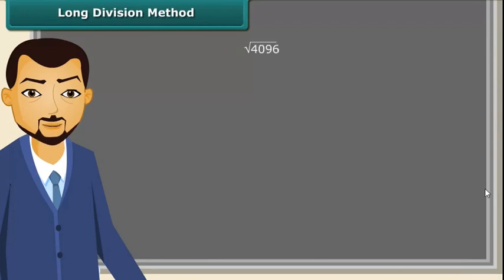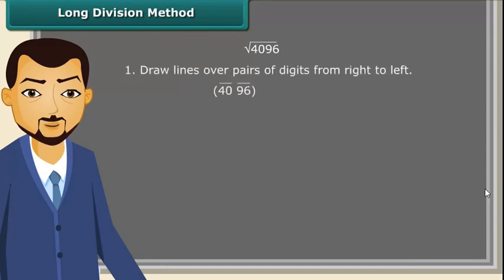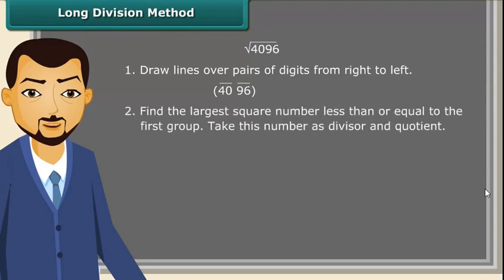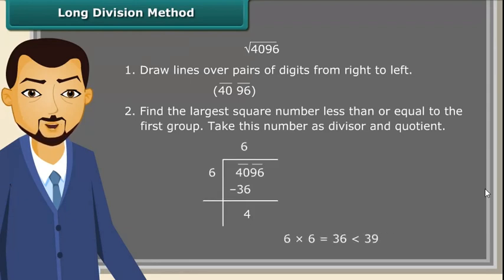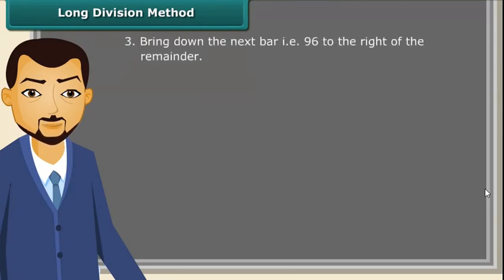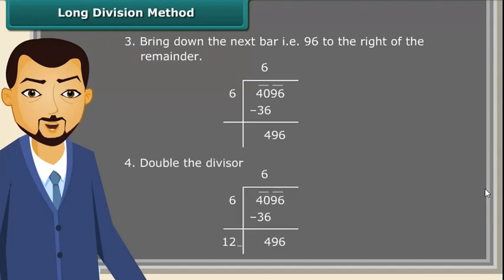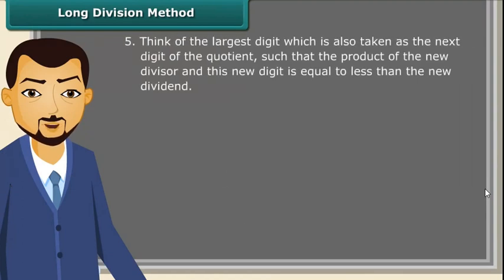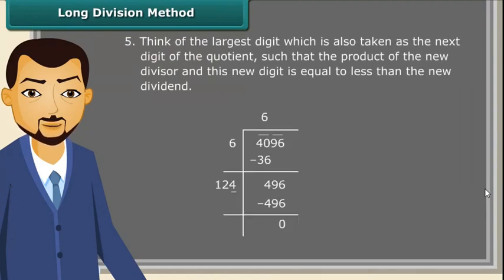For large numbers, the prime factorization method of finding square roots becomes difficult, so we use the long division method. First, draw lines over pairs of digits from right to left. Next, find the largest square number less than or equal to the first group — that is 40. Since 36 is less than 40, take 6 as the divisor and 6 as the quotient. Subtract 36 from 39, then bring down the next bar — that is 96 — to the right of the remainder. Now double the divisor, then think of the largest digit, which is also taken as the next digit of the quotient, such that...